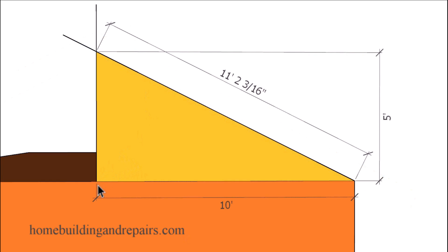In our example here we have a 20-foot wide span for our building. Half of that span will be 10 feet, and we're going to need this measurement to calculate the theoretical length of the roof rafter. In this example we have a 6 and 12 roof pitch, so for every foot we're going to go up 6 inches.